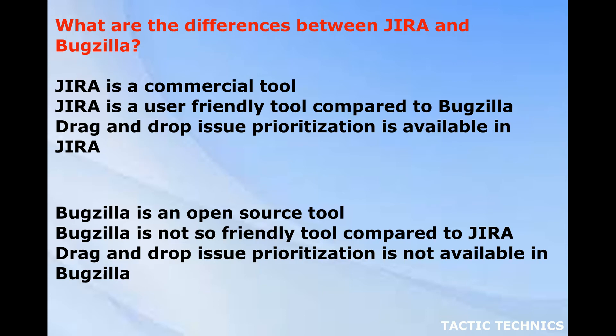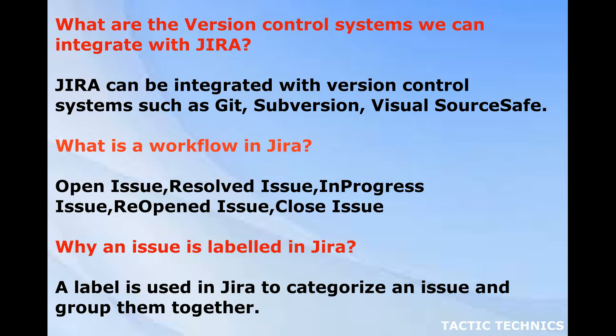What are the differences between Jira and Bugzilla? Jira is a commercial tool and is more user-friendly compared to Bugzilla; drag and drop issue prioritization is available in Jira. Bugzilla is an open source tool, is not as user-friendly compared to Jira, and drag and drop issue prioritization is not available in Bugzilla.